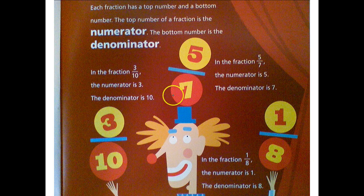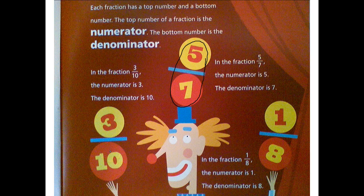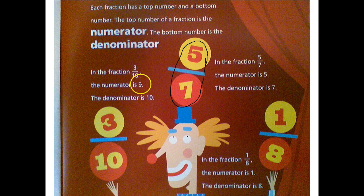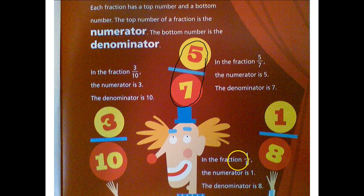What we really need to think about is how the numerator and denominator are put together to make a number. Five-sevenths is a number. Three-tenths is a number. Fractions are numbers just like whole numbers one, two, three, four, etc. In the fraction three-tenths, the numerator is three, the denominator is ten. In five-sevenths, we have numerator five, denominator seven. In one-eighth, the numerator is one and the denominator is eight.